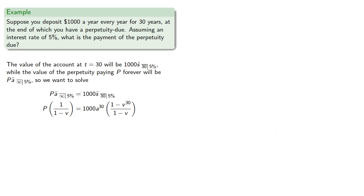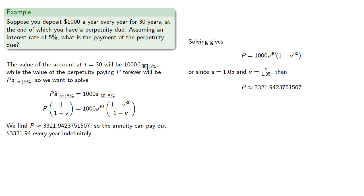Solving our equation, since a is 1.05 and v is the reciprocal we find the annuity can pay out $3,321.94 every year indefinitely, where we round down to make sure that the annuity never runs out of money.